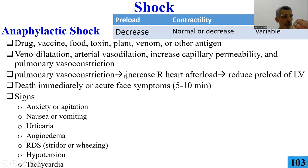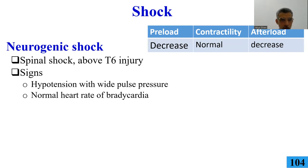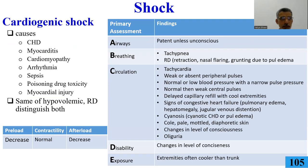There is neurogenic shock from causes such as trauma, and cardiogenic shock caused by diseases such as myocarditis and cardiomyopathy.